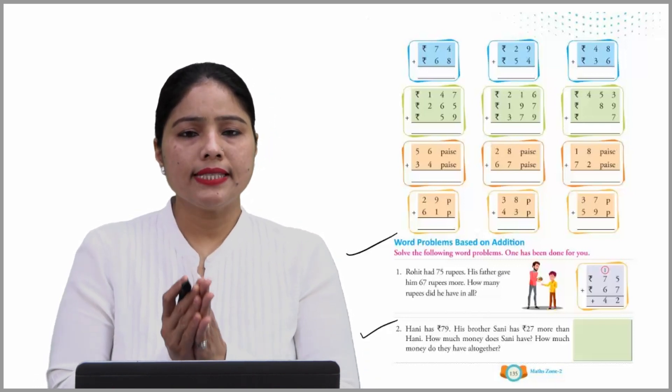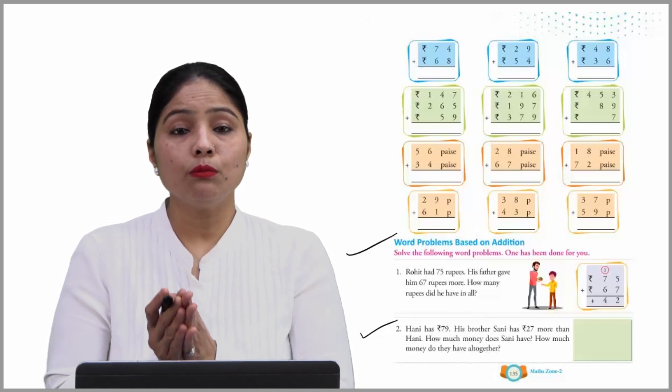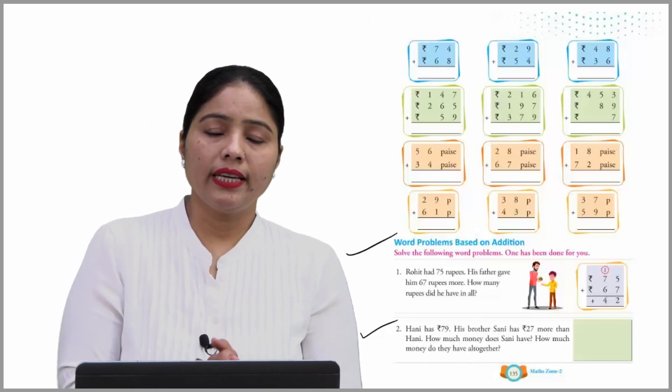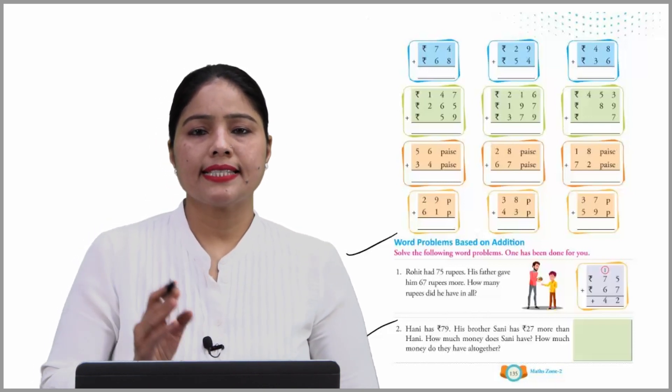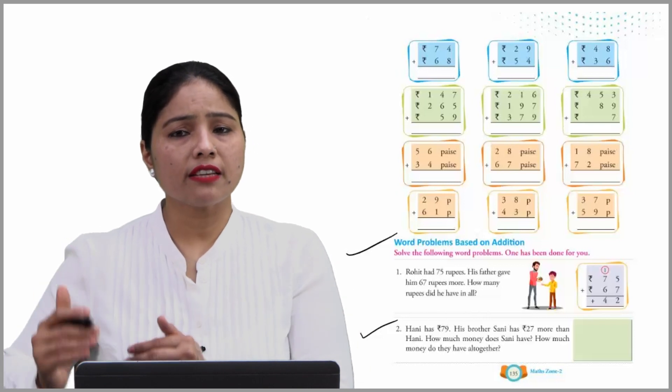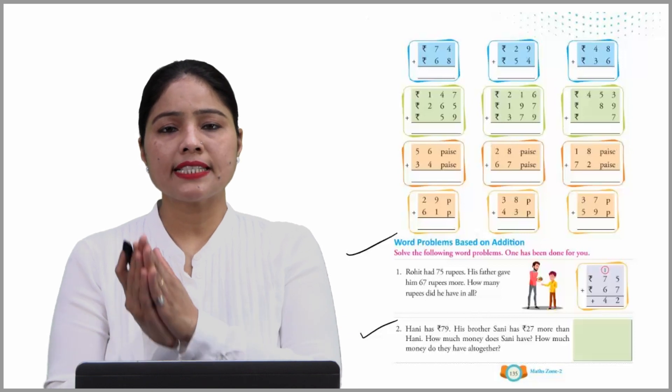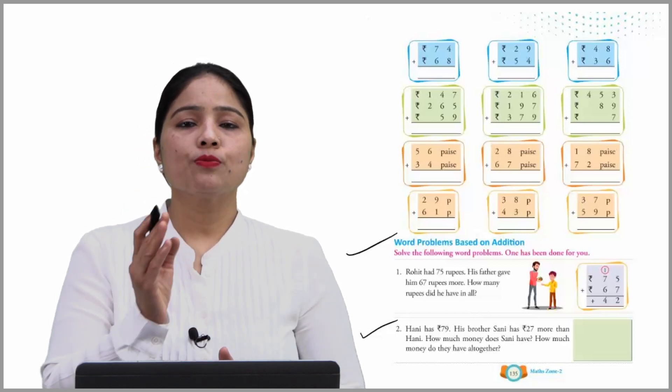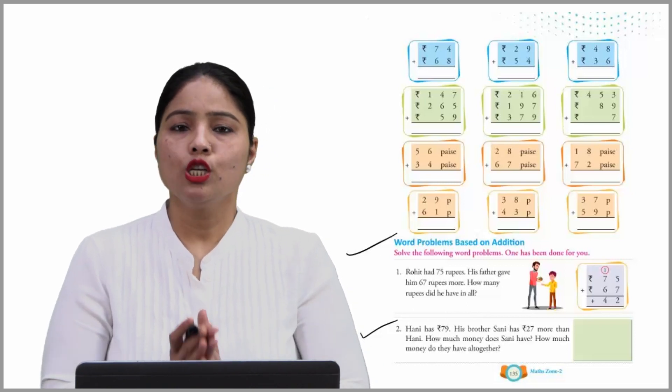Harry has 79 rupees. His brother Sanny has 27 more than Harry. Then how much money does Sanny have? And how much money do they have all together?